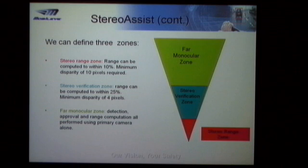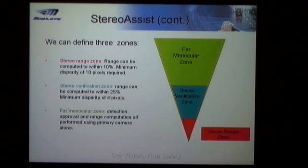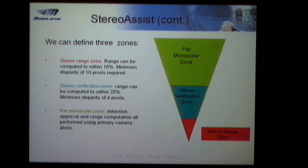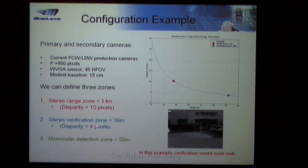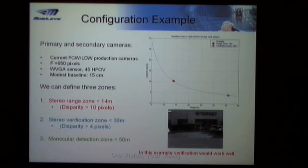In terms of geometry, we can think of three different zones. One zone is where we have range: assuming one pixel accuracy in disparity, to get at least 10% accuracy in range we need a disparity of 10 pixels. For verification, a disparity of 4 pixels is sufficient. And in some cases we won't be able to get any useful disparity at all — this is what we call the monocular zone. Back to our example: the pedestrian at 33 meters is well within the verification zone of the system, though we probably wouldn't get much improved depth estimate in this case.